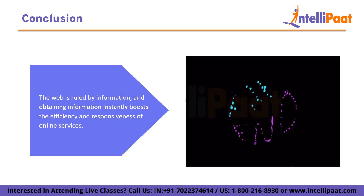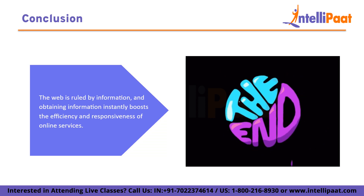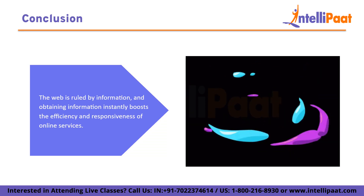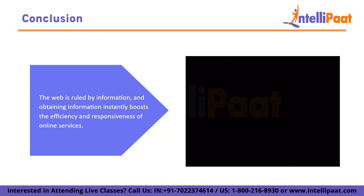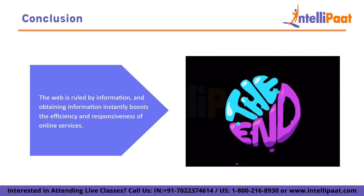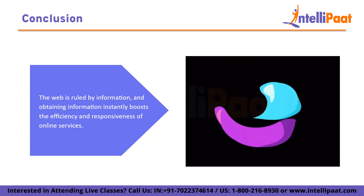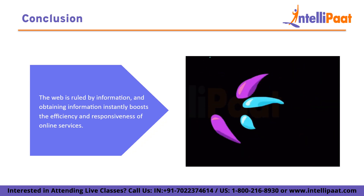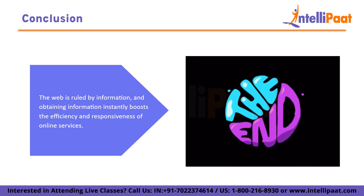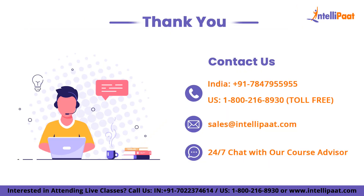In conclusion, the web is ruled by information, and obtaining information instantly boosts the efficiency and responsiveness of online services. A simple method of enabling real-time information sharing between online sites is provided by webhooks technology. Fanning out is the process of distributing a single webhook request to numerous locations that need the data, which improves information distribution across the web and enables source systems to communicate with more apps. With that, we come to the end of this video. Thank you for watching.